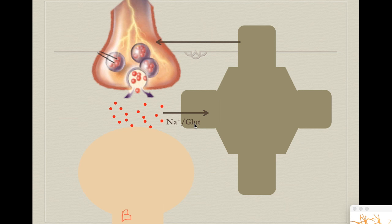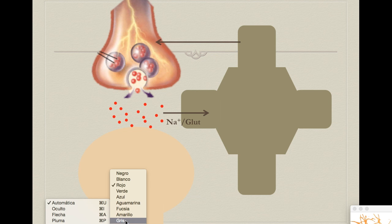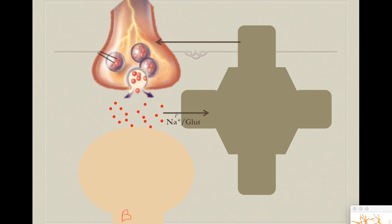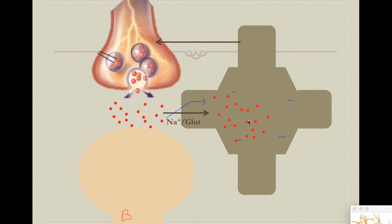This is why another cell called the astrocyte — an important part of the glial cells — has a special transporter. This transporter uses sodium outside of the cell and couples it with the transport of glutamate. Sodium is always desperate to get inside the cell, so the astrocyte says: if you want to come in, you have to bring a glutamate with you. So every time a sodium molecule comes in, it brings a glutamate molecule along.